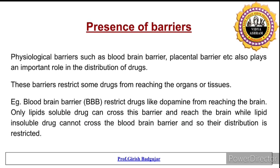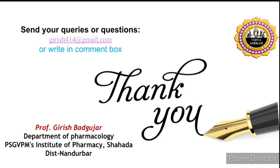The final factor is the presence of physiological barriers. Barriers such as the blood-brain barrier (BBB) and the placental barrier play an important role in drug distribution by restricting certain drugs from reaching specific organs. For example, the blood-brain barrier restricts drugs like dopamine from reaching the brain. Only lipid-soluble drugs with low molecular weight can cross these barriers. So the entry of a drug into a barrier-protected organ depends on its lipid solubility, ionization, molecular weight, and membrane permeability. This concludes our discussion on distribution of drugs. Thank you.